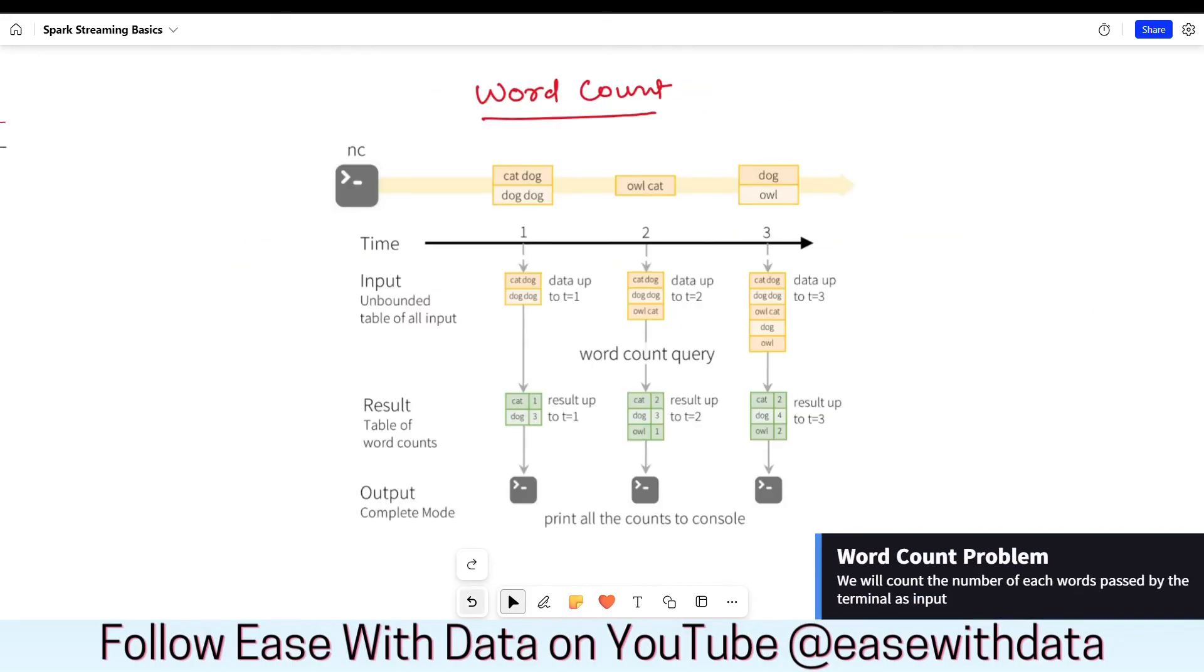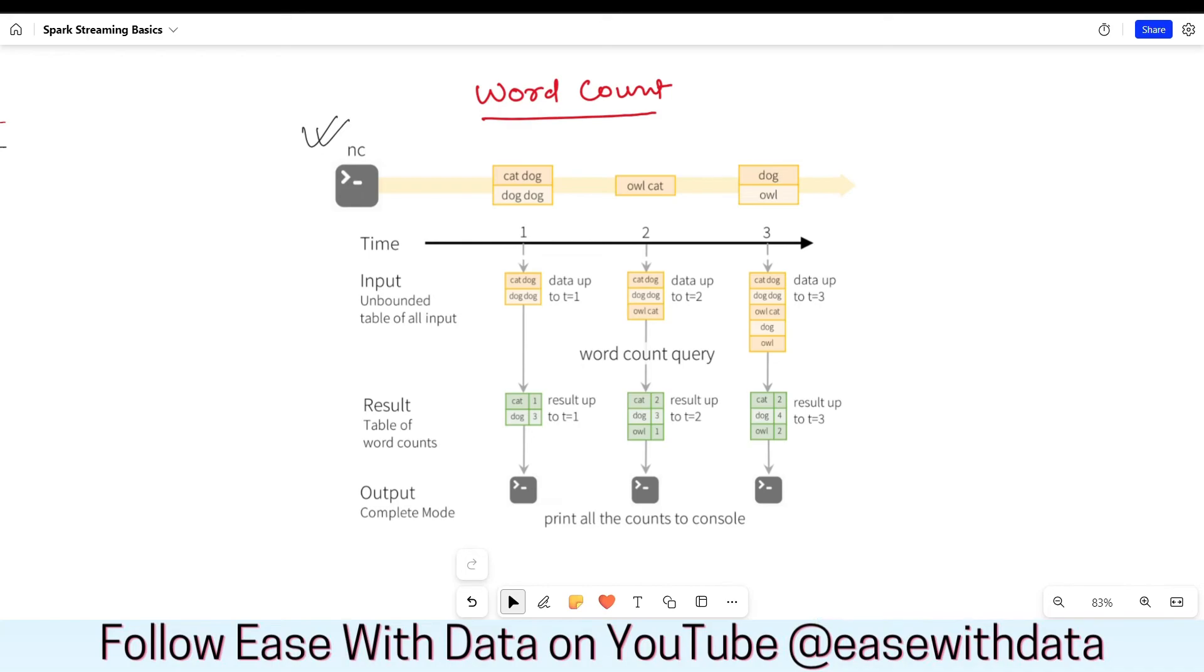Consider this word count problem. We are using a NCAT terminal in order to input data. Now, we are writing words that Spark will count and will display the output in our terminal. It's a very simple program. So, consider the very first second, you wrote cat dog and dog dog. The input to the unbounded table, you can see for the first second. Now, Spark runs the data frame queries and counts the cat as 1 and dog as 3. It provides the output to the terminal.